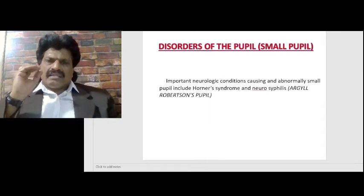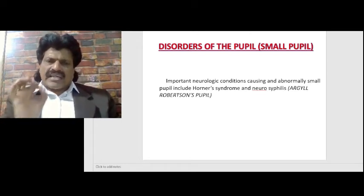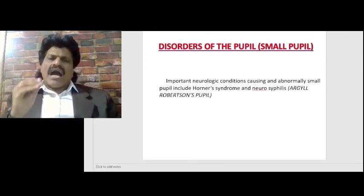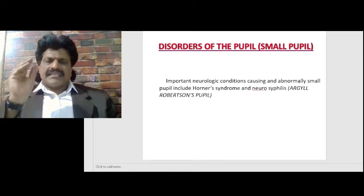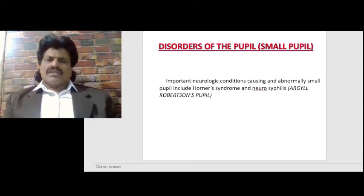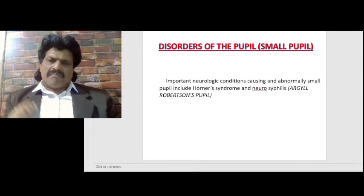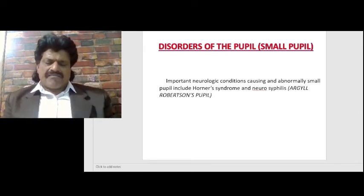Now we'll talk about disorders of the small pupil. Important neurologic conditions causing an abnormally small pupil include Horner's syndrome and neurosyphilis — that is, Argyll Robertson's pupil. Because the sympathetic is responsible for dilatation of the pupil, when the sympathetic gets affected — as in Horner's syndrome — the pupil cannot dilate and will be small. In Argyll Robertson's pupil, the lesion is in the pre-tectal nucleus, and accommodation reflex is present but light reflex is absent.